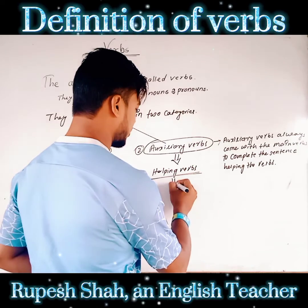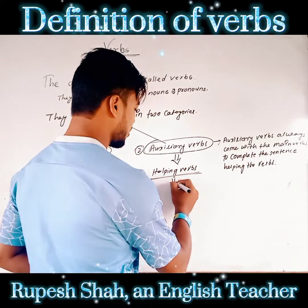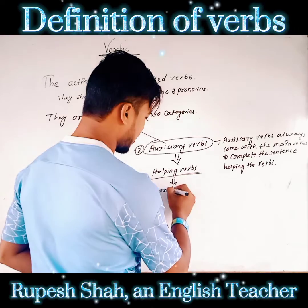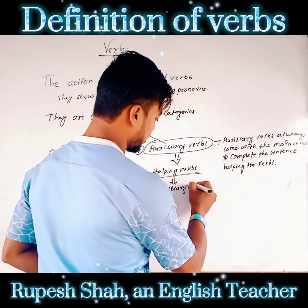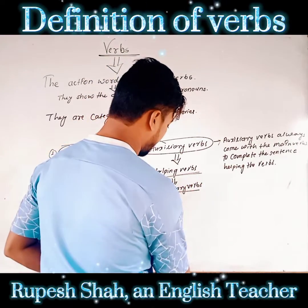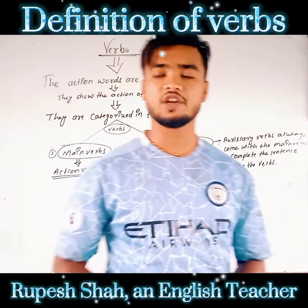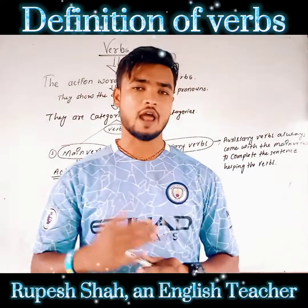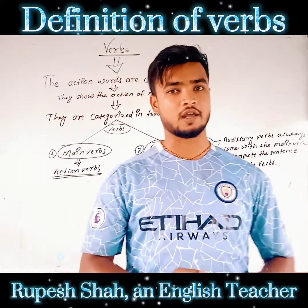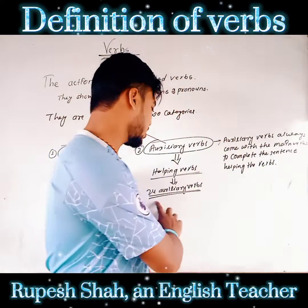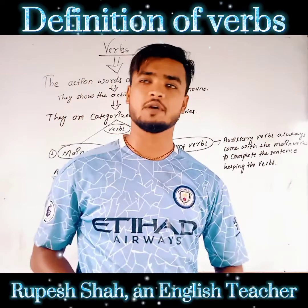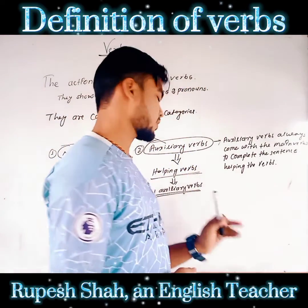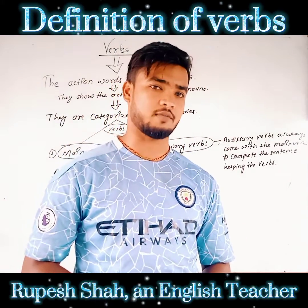There are 24 auxiliary verbs. According to English grammar, according to both British English and American English, there are 24 auxiliary verbs.